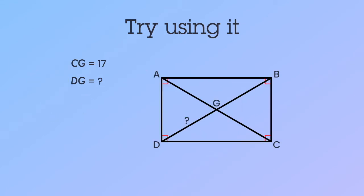Let's try another one. If you know that CG is 17, now notice CG is not the entire diagonal. It's just from a corner to the center. That's 17.